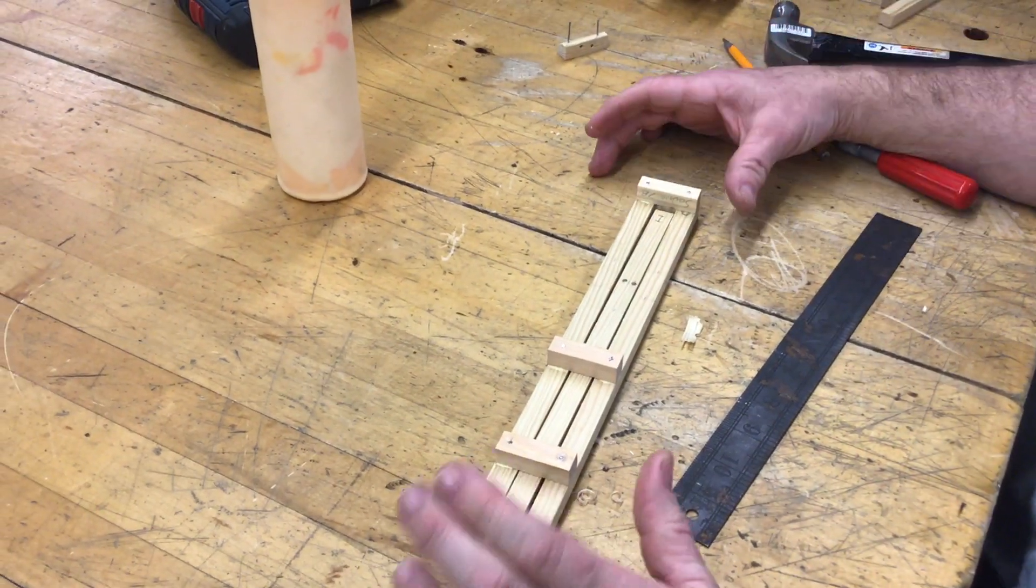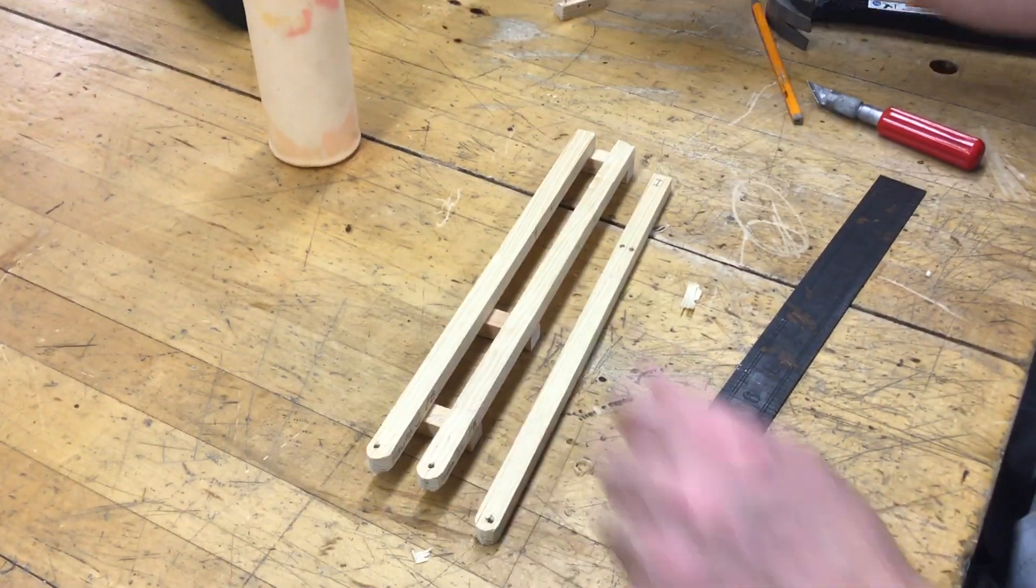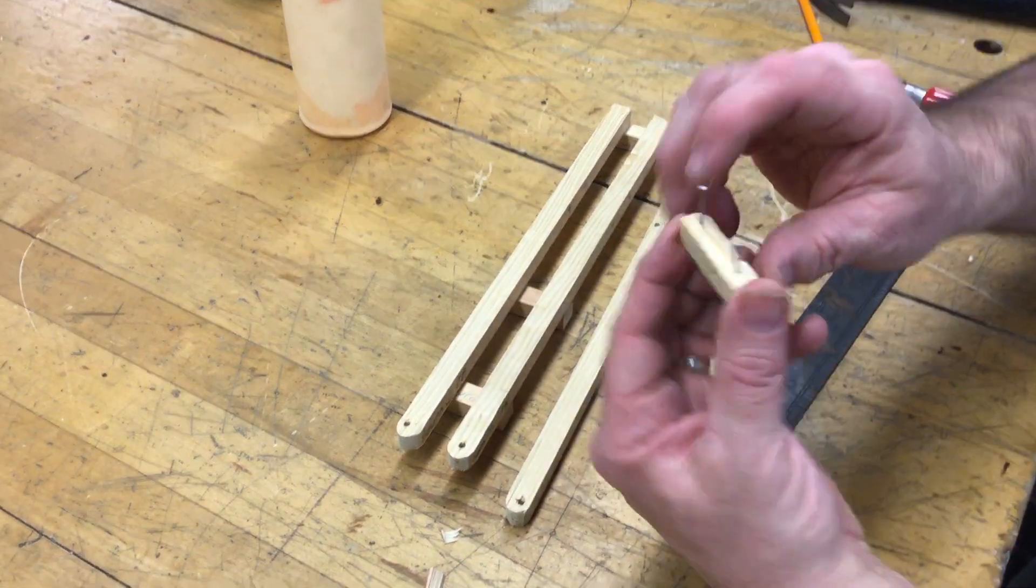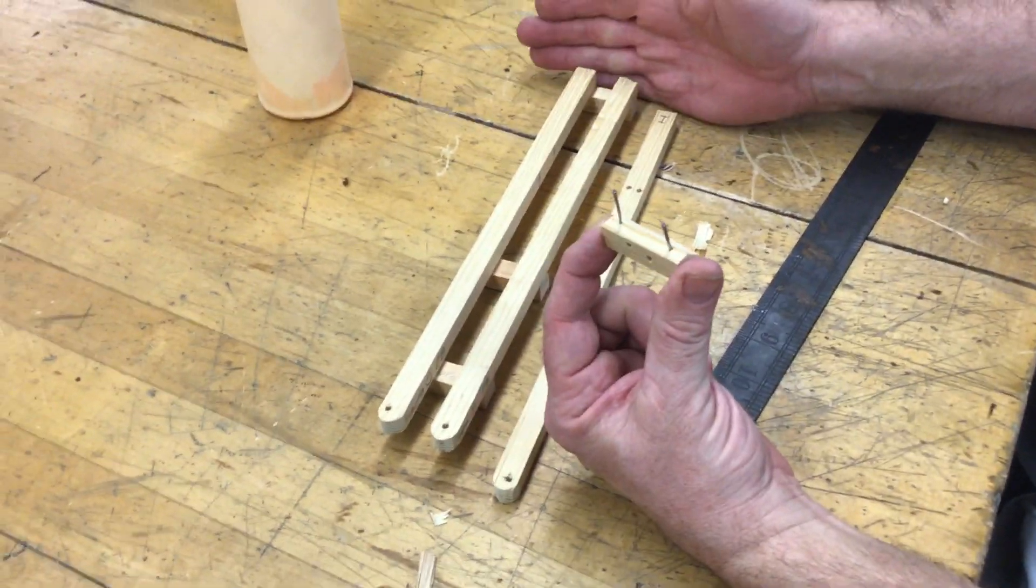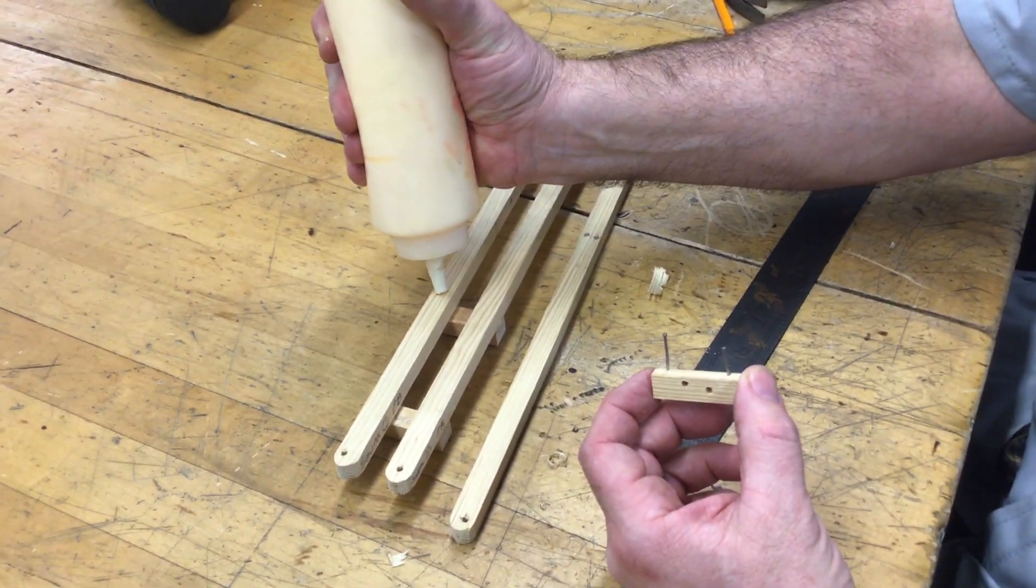So far so good. Flip it. This piece—the slant will point towards the square side. We're going to put it right over the middle piece.